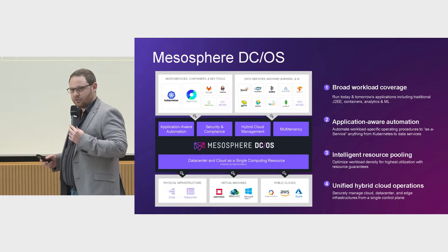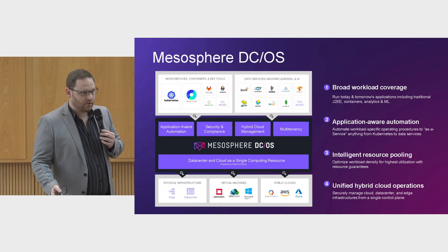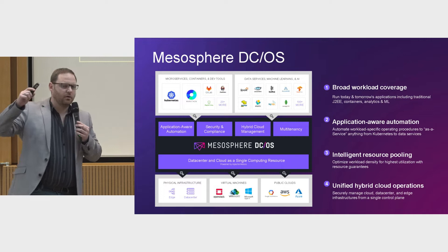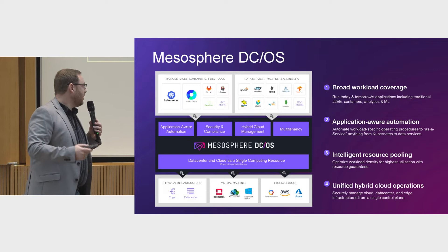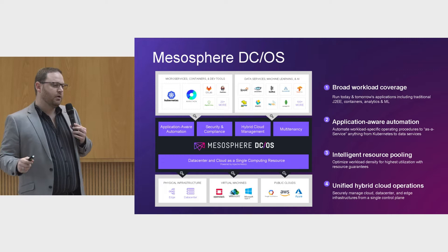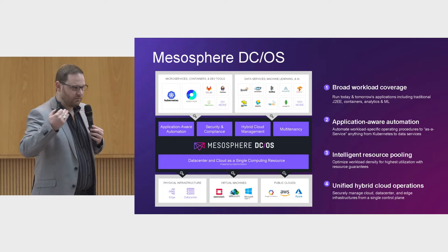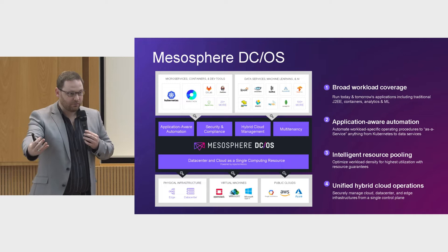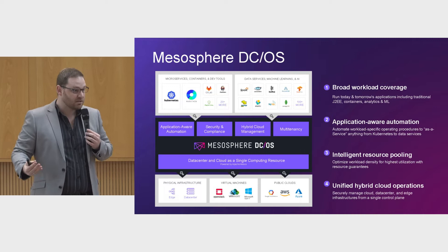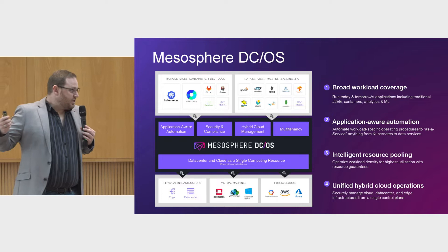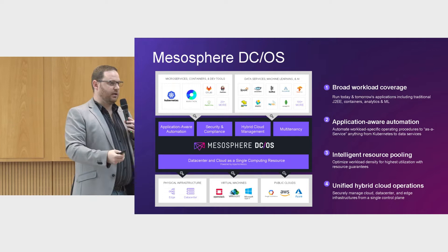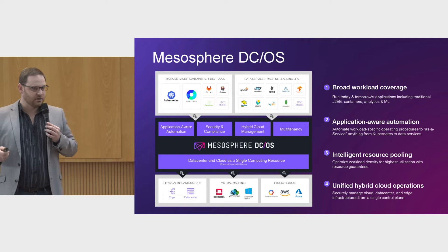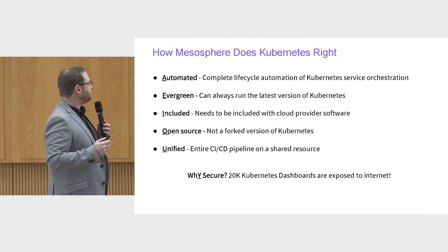The fourth thing we do with Mesosphere DCOS is automated, unified cloud operations. We don't care if you run on public cloud, private cloud, VMware, Hyper-V, KVM — as long as you can run Linux, you can run Mesosphere DCOS. You can run a unified cluster across disparate environments, bursting into the cloud for certain workloads based on seasonality or cost. This gives you the full public cloud experience across your infrastructures without locking into one single cloud provider.